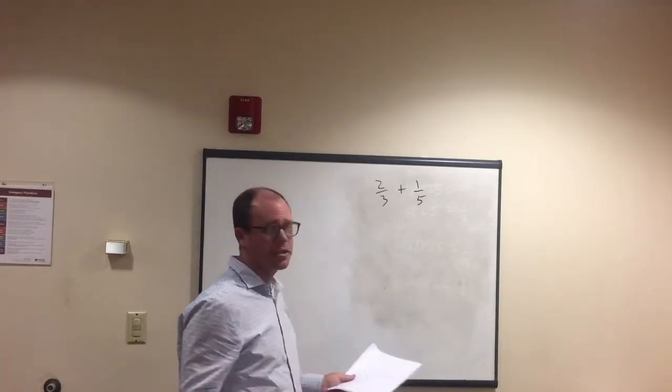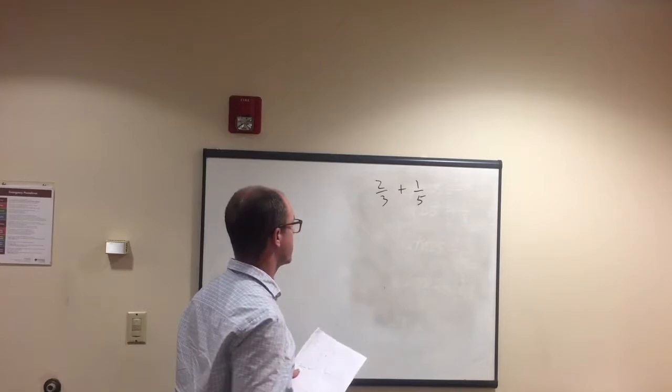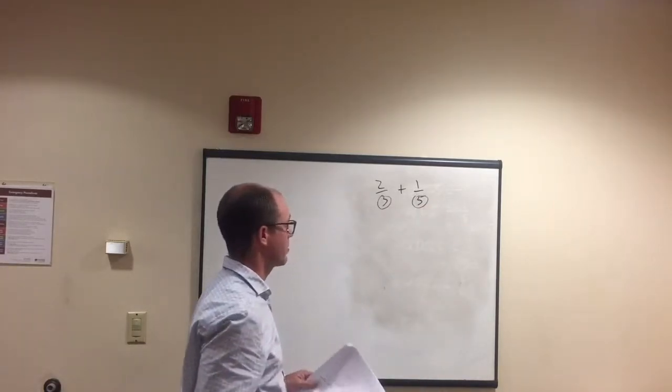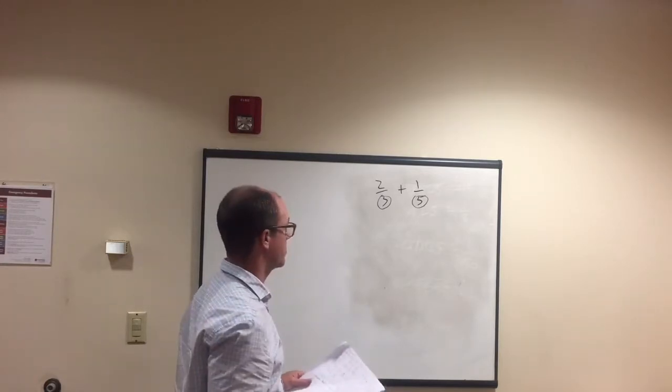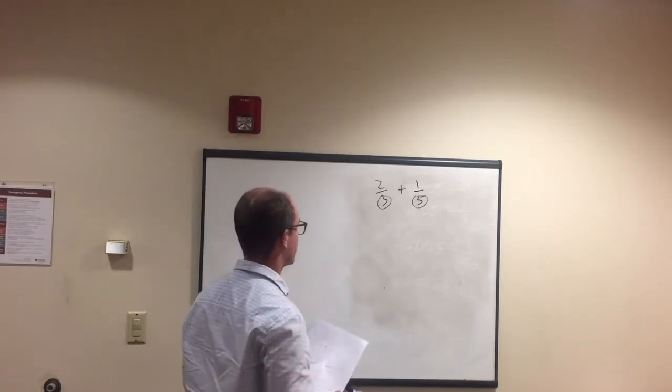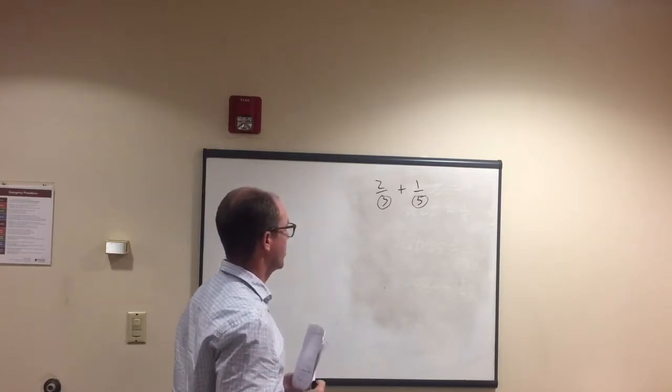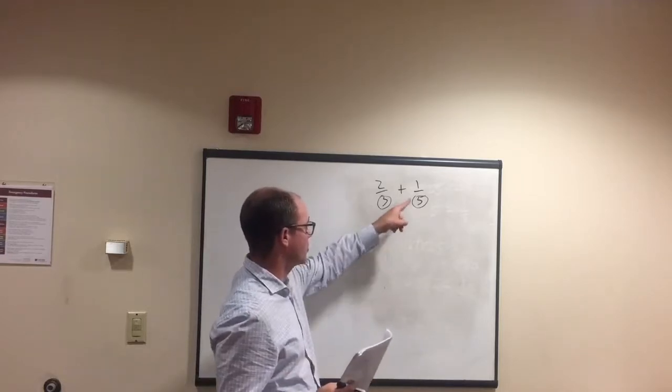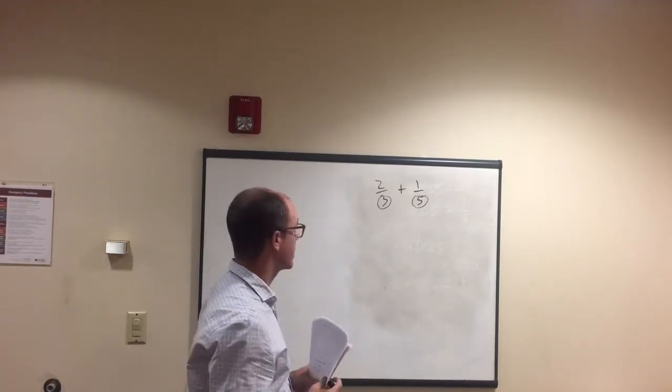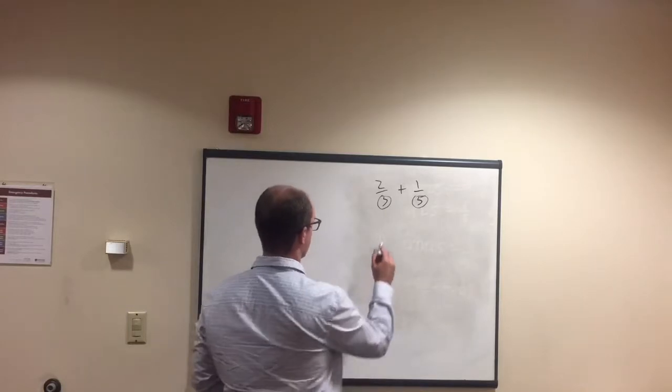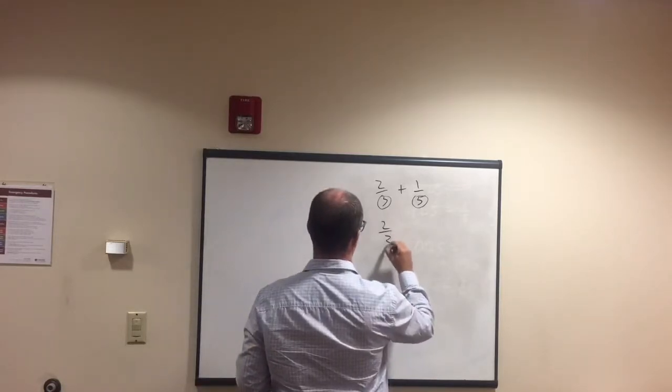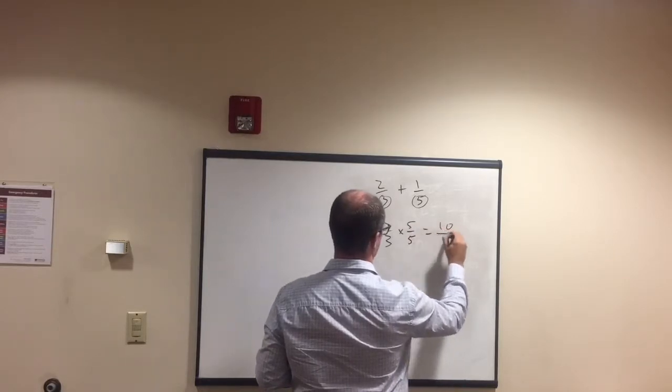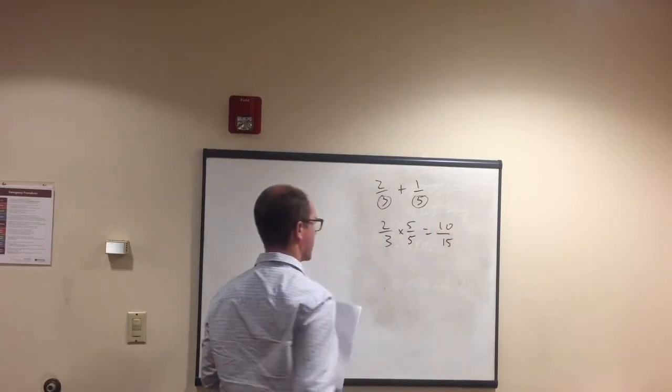Okay, so we need to find here what's known as the common denominator, which means that this number and this number need to be the same so that we can add them. Different rules when we're multiplying, but in this case we have to have the same. And so, what we would find there is a number that can be the same for both of them. If you don't know, you can just multiply these two together. So 3 times 5 is 15. Okay, so the way we do that is we go 2 thirds times 5 over 5 equals 10 over 15.